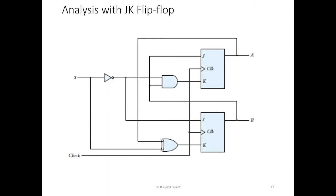In this video lecture, let us discuss the analysis of a sequential circuit that uses JK flip-flops. In the analysis procedure, we have to find out the functions to compute A of t plus 1 and B of t plus 1, and additionally if we have some external output, that equation should also be computed from the input.